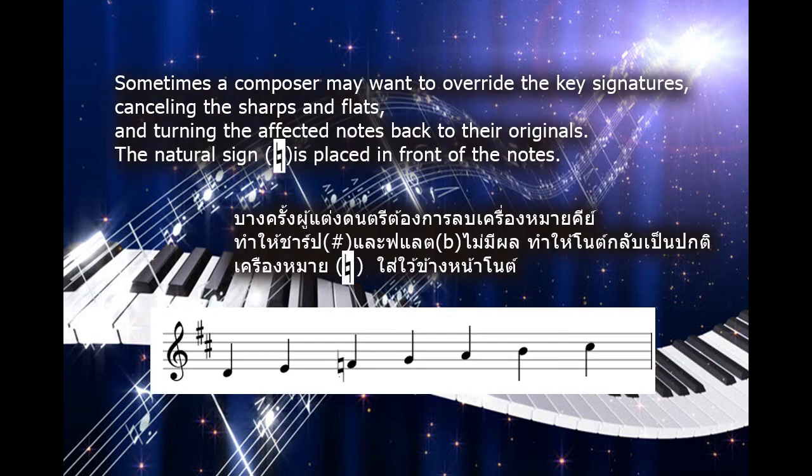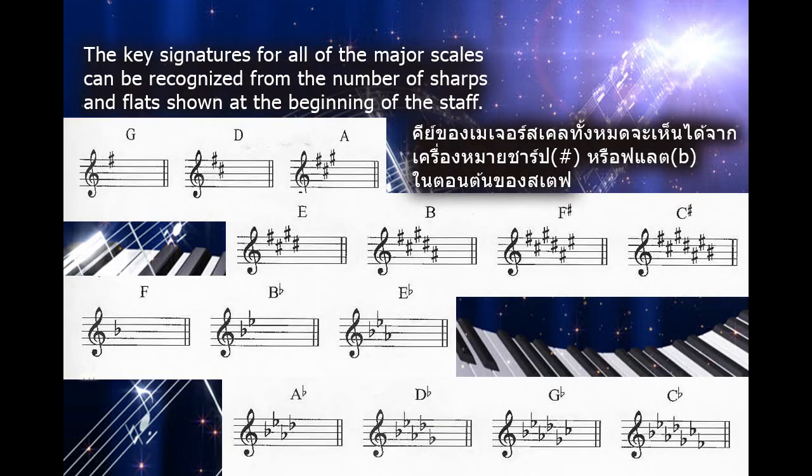Sometimes a composer may want to override the key signatures, cancelling the sharps and flats, and turning the affected notes back to their originals. The natural sign is placed in front of the notes. The key signatures for all of the major scales can be recognized from the number of sharps and flats shown at the beginning of the staff.